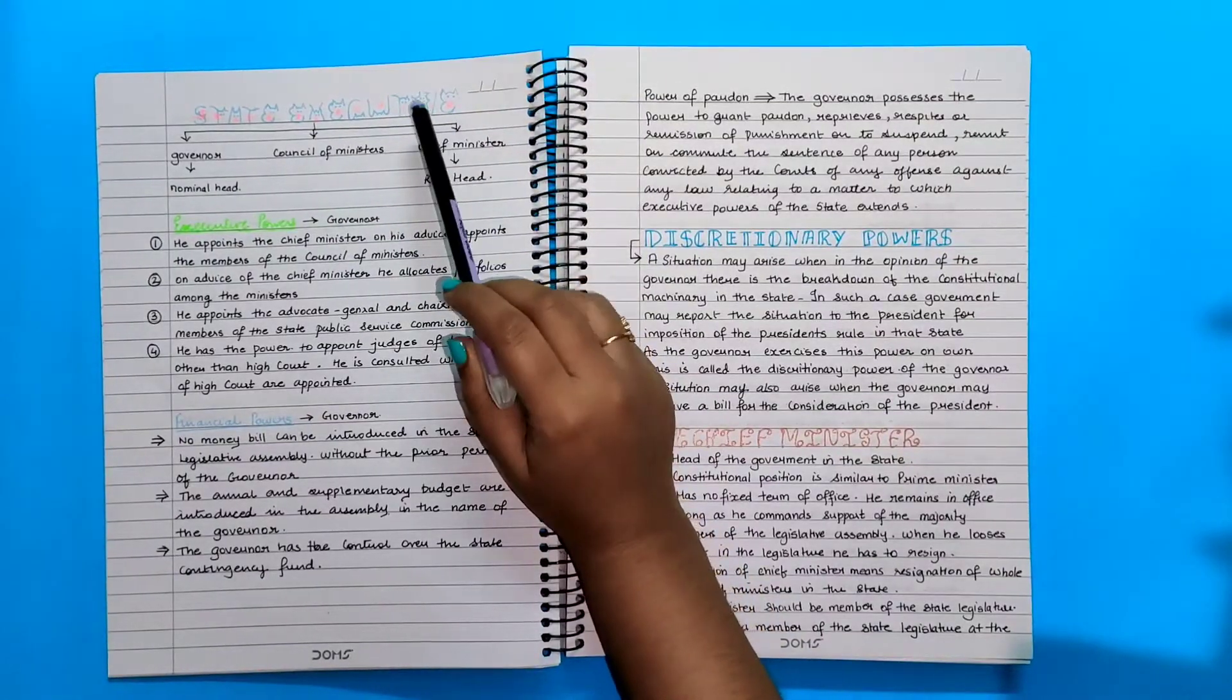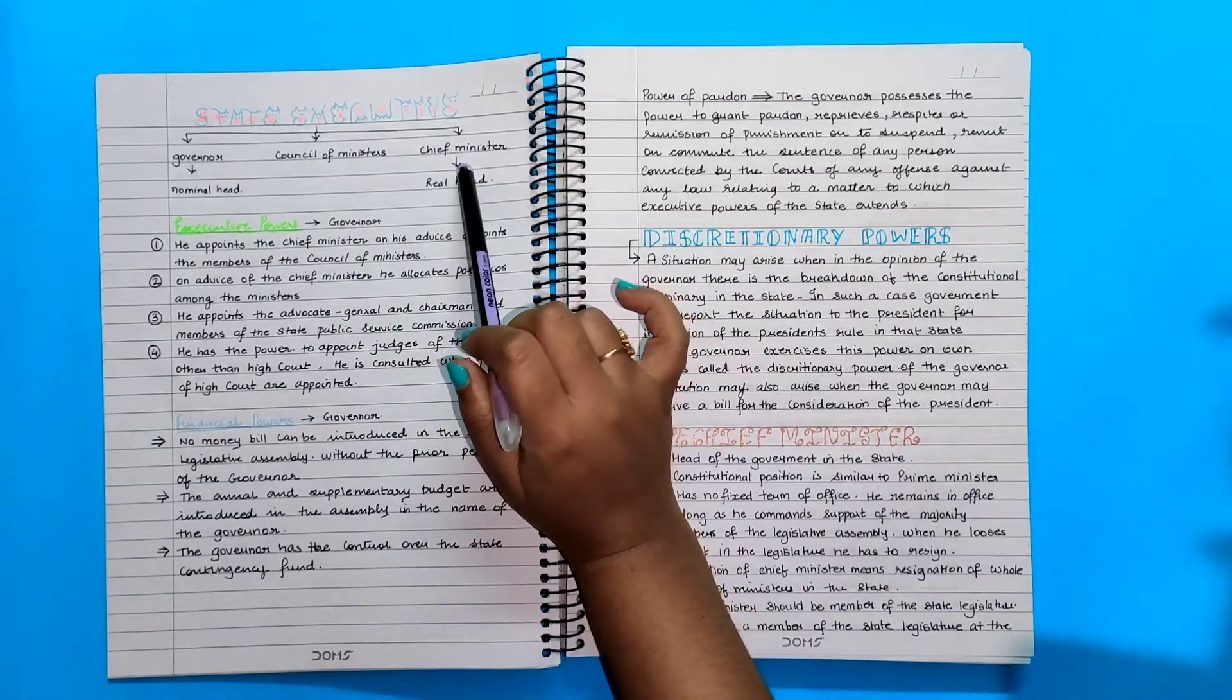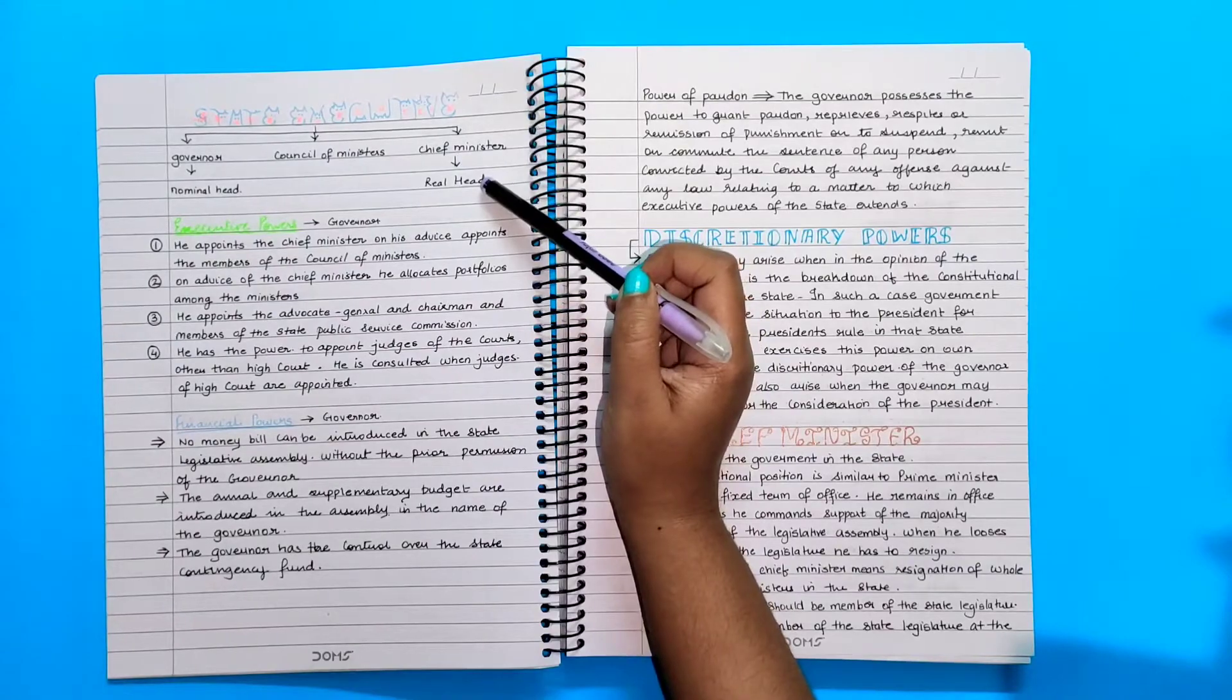State executive consists of governor, council of ministers and chief minister. Governor is the nominal head whereas the chief minister is the real head.